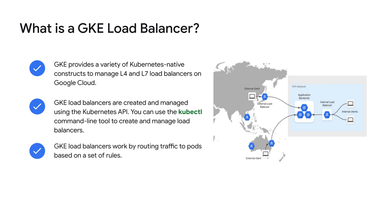GKE load balancers work by routing traffic to pods based on a set of rules. These rules can be based on the hostname, path, or HTTP method of the requests. When a client sends a request to the load balancer, it first checks the routing rules to see which rule matches the request. If a rule matches, the load balancer routes the request to the associated pod; if no rule matches, it routes the request to a pod randomly. GKE load balancers use a round-robin algorithm to distribute traffic across the pods that match a rule. Additionally, you can configure GKE load balancers to use different algorithms, like weighted round-robin algorithms, for distributing traffic.